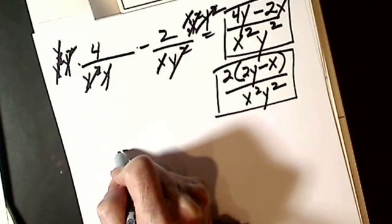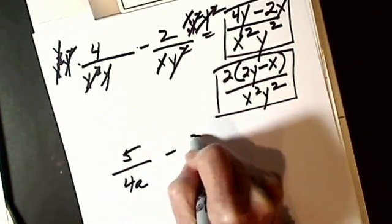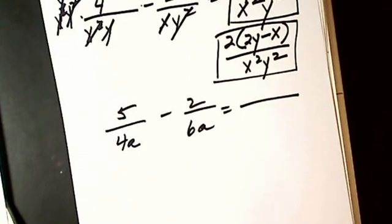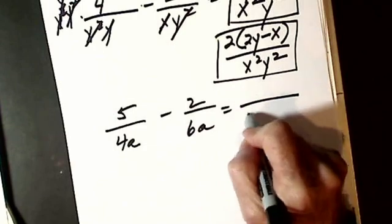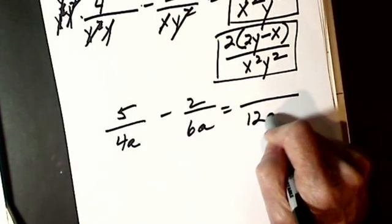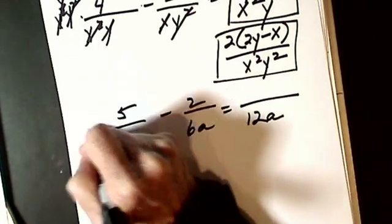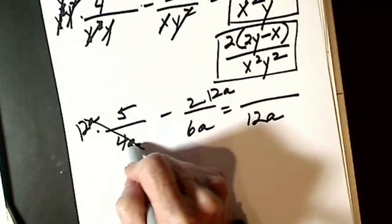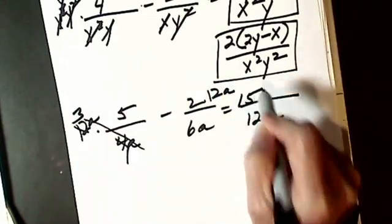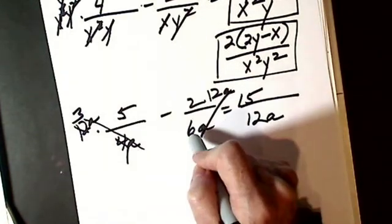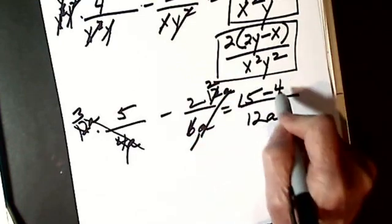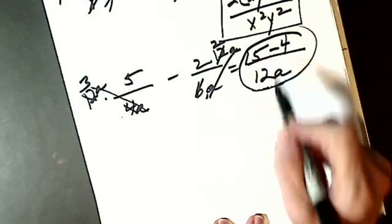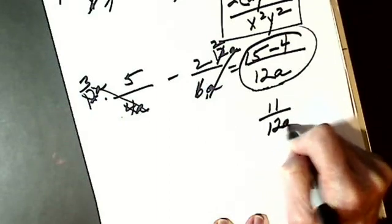Let's say I have 5 over 4a minus 2 over 6a. You get a common denominator of your numbers: 6 doesn't work, so it's going to be 12. I just have 1a. I take 12a, multiply by each term, and cancel. My a's cancel, 4 into 4 is 1, 4 into 12 is 3, so I get 15. My a's cancel, 6 into 6 is 1, 6 into 12 is 2, so I get minus 4. I notice I can combine my terms in the numerator and I get 11 over 12a.